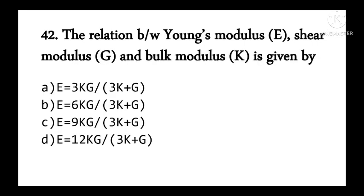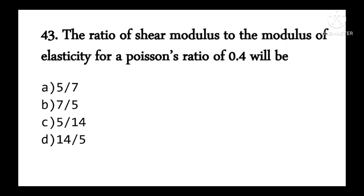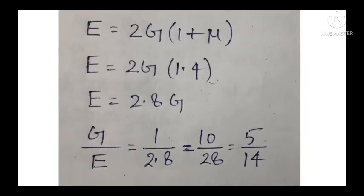The relation between Young's modulus E, shear modulus G, and bulk modulus K is: E = 9KG / (3K + G). For the ratio G/E with Poisson's ratio 0.4: substituting μ = 0.4 gives E = 2.8G, so G/E = 1/2.8 = 10/28 = 5/14.